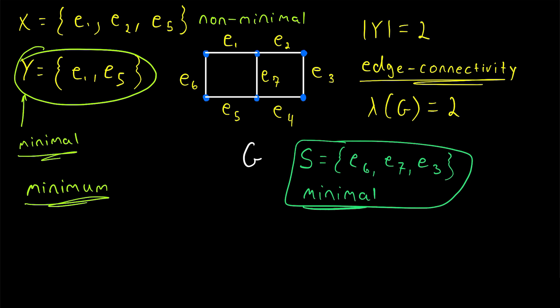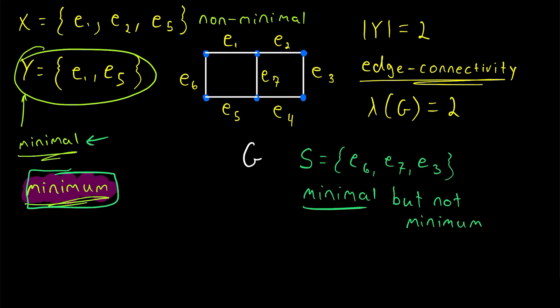However, it's certainly not a minimum edge cut, because a smaller edge cut exists in this graph. The edge cut Y, for example, which has just two edges, compared to the three edges in S. So S is minimal, but not minimum. Although, certainly, if an edge cut is minimum, then it must be minimal. Otherwise, it couldn't possibly be minimum, because we could find a smaller edge cut using some of its edges.